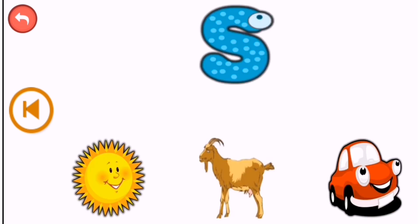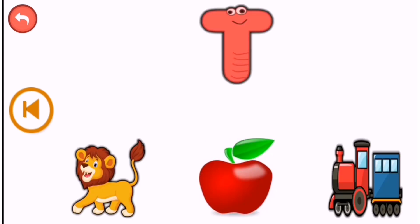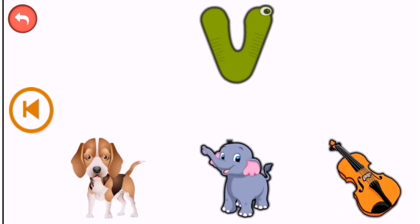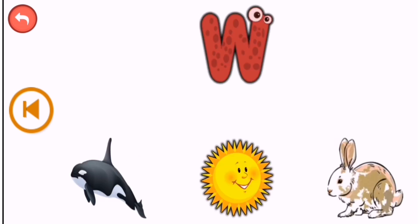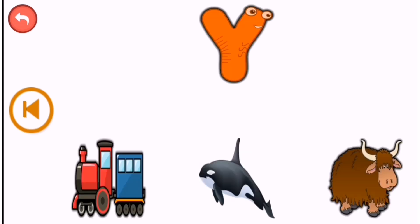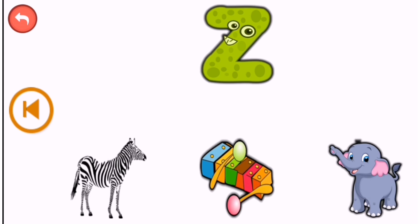Guess below the picture. S — sun. T — train. U — umbrella. V — violin. W — whale. X — xylophone. Y — yak. Z — zebra. Thank you.